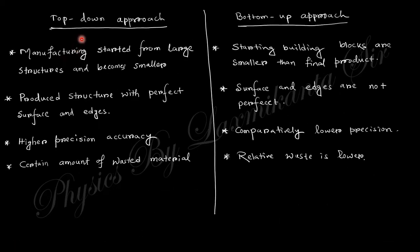In top-down, manufacturing starts from large structures and becomes smaller. In bottom-up, starting building blocks are smaller than the final product. Top-down produces structures with perfect shape and edges with high precision, while bottom-up has lower precision but less waste.